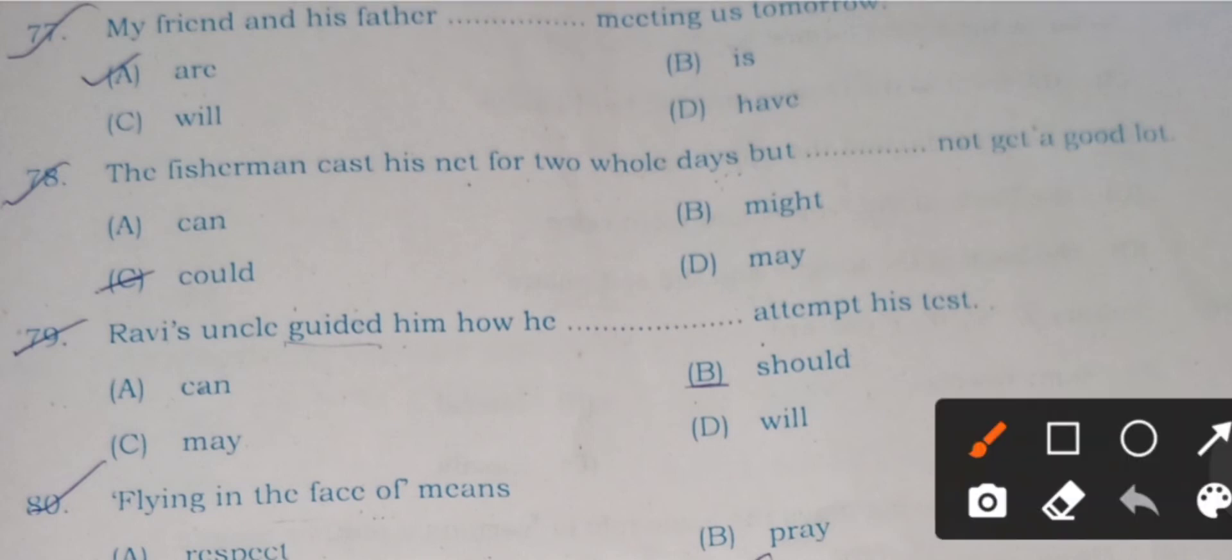Question 78: The fisherman cast his net for two whole days but could not get a good lot. Four options are given: A) can, B) might, C) could, and D) may. Here C is the correct answer.